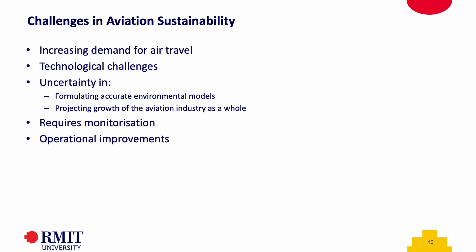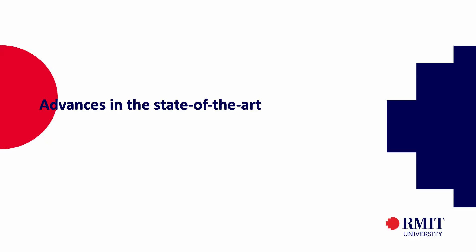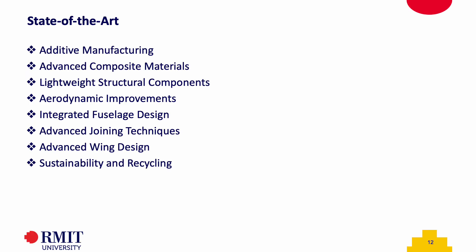Next are advances in state-of-the-art technologies. This includes additive manufacturing — techniques used in the production of aircraft components, which includes 3D printing — allowing for complex and lightweight structures and reducing manufacturing waste and lead times. Next is advanced composite materials. Aircraft manufacturers continue to utilize advanced composite materials such as carbon fiber reinforced composites to reduce weight and improve fuel efficiency. These materials offer a high strength-to-weight ratio, corrosion resistance, and increased design flexibility. Next is lightweight structural components.